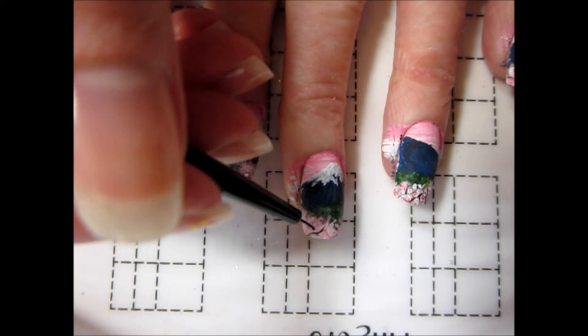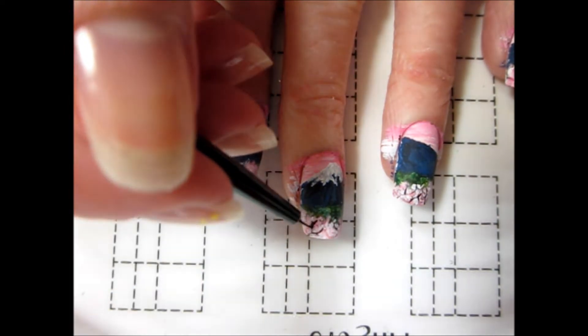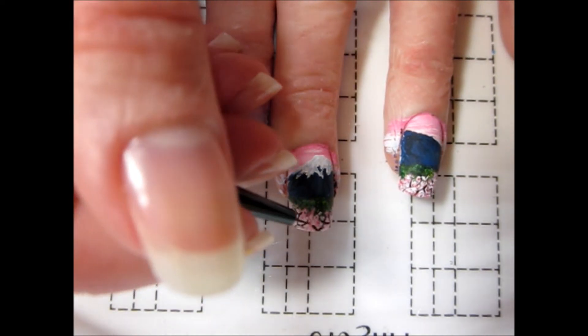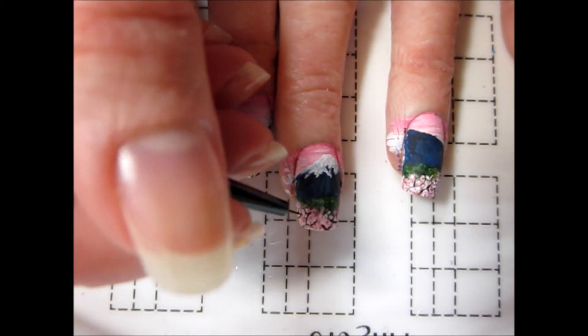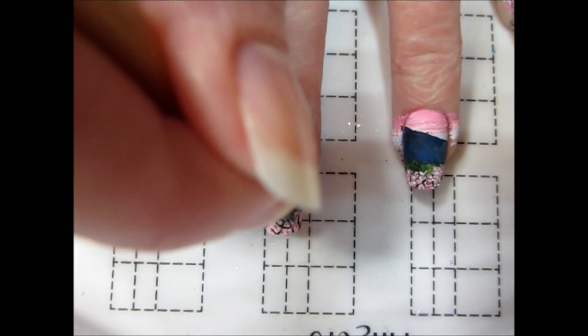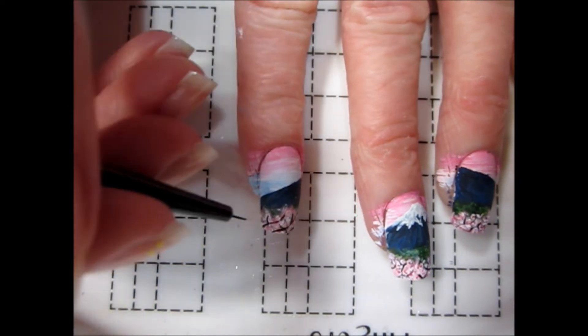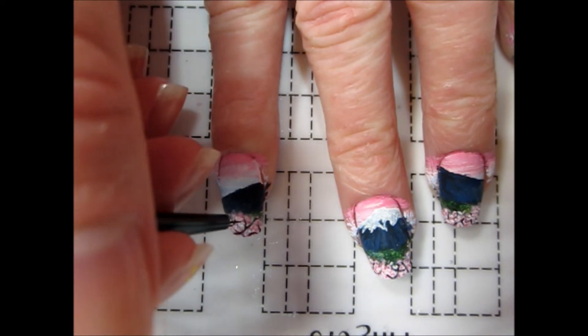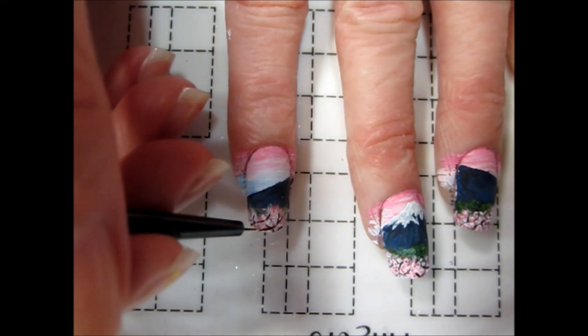I then used my thinnest detail brush and dark brown paint to add some curving branches throughout the blossoms. To finish the painting, I used my detail brush to add a few dots of color over the branches. I used the same two pink shades as before and white to add some individual petals. You want some of these dots to overlap the branches to make it look like the petals are in front of the trees.